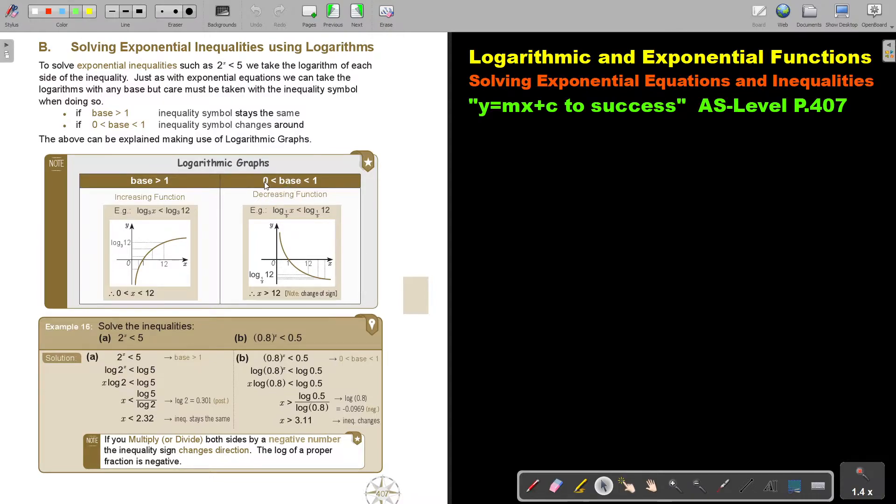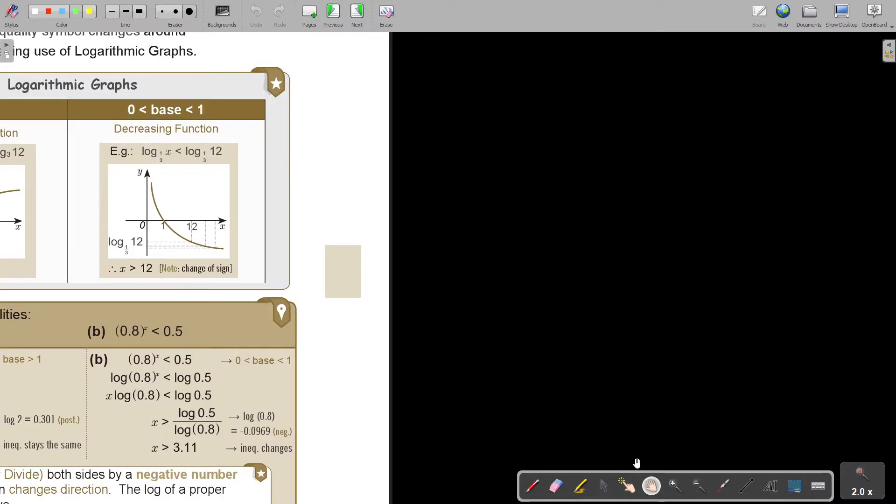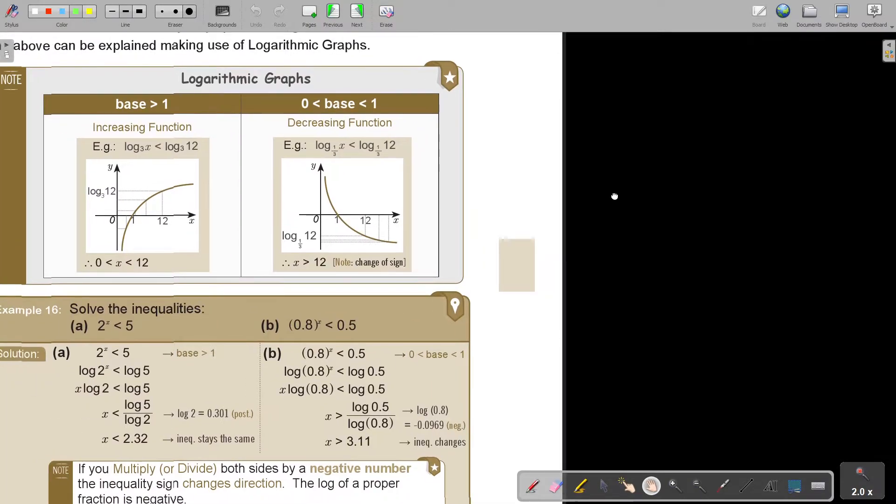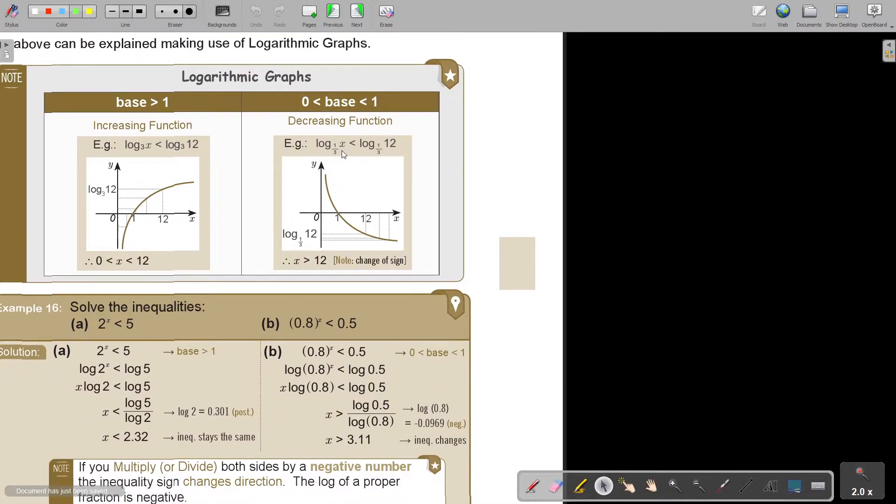But if the base is bigger than 0 and smaller than 1, now it's going to be a fraction. If you take log x with a base... Let me get it bigger to see better. Here it is: log x with a base of a third or log 12 with a base of a third. So smaller. Then basically, look at the graph now. The graph is now like this. If you see, say there is 12 and you start drawing that region, then you're going to say that x is bigger than 12. So the inequality sign swapped around. It's going to be best explained when we do examples.